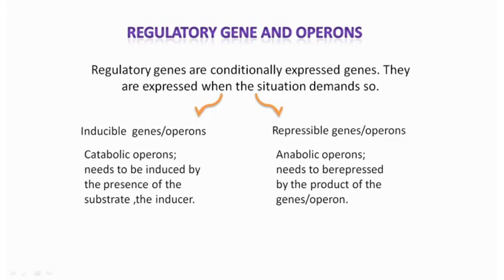Repressible operons are anabolic or biosynthetic operons — those genes involved in biosynthesis processes, like the trp operon. Tryptophan is an essential amino acid that needs to be synthesized in the cell. Five genes are involved in its biosynthesis. Normally synthesis is ongoing, so the genes are in switched-on mode, but when the level of tryptophan becomes sufficient in the cell, they repress the expression of the genes required for their biosynthesis. That's why it is called a repressible anabolic operon.